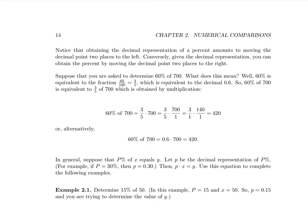Let's look at this in the line below. 60% of 700 is equal to three-fifths of 700. To do this multiplication, we express 700 as the fraction 700 over 1. We multiply the two fractions, and the result is 420.